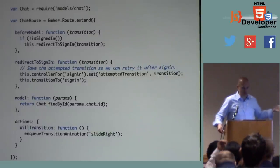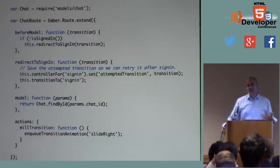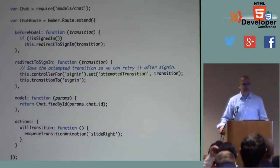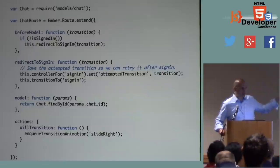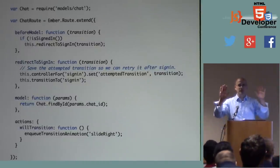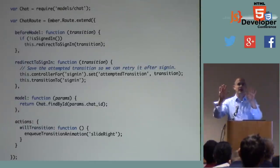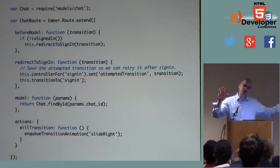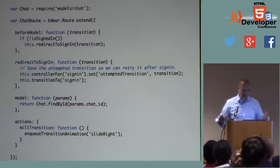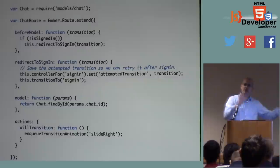This will transition hook is one I use to enqueue transition animations. If I've got a master-detail view and I'm in the detail and hit the back button — like in an iOS app — I get this will transition hook where I can enqueue a sliding animation, for example.